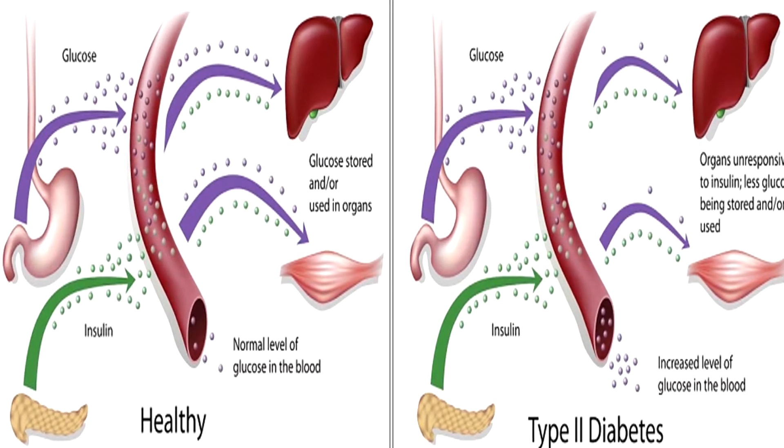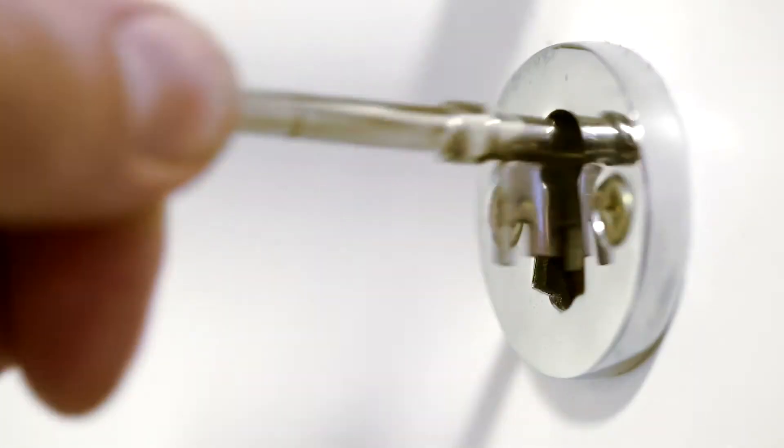When insulin can't bring blood sugar from the blood into the cells, blood sugar starts accumulating in the blood. That's what causes high blood sugar, pre-diabetes, and type 2 diabetes. It's like a lock and key analogy — normally a key and lock work perfectly because they're made for each other.